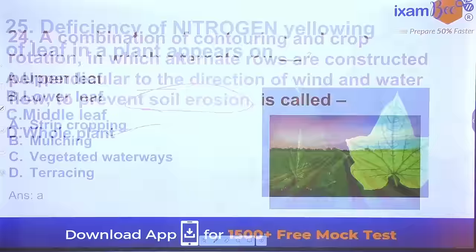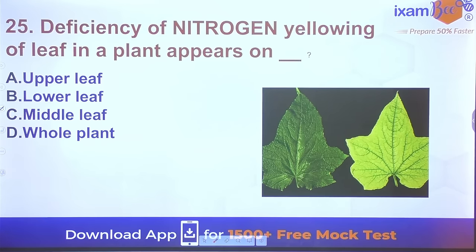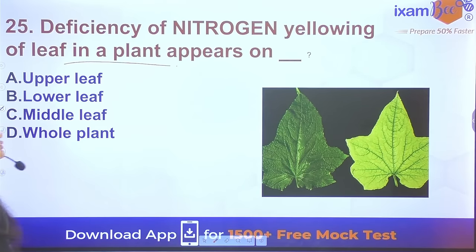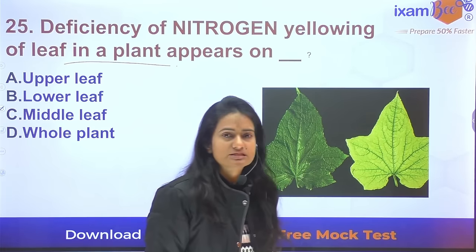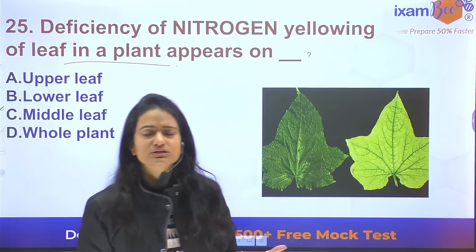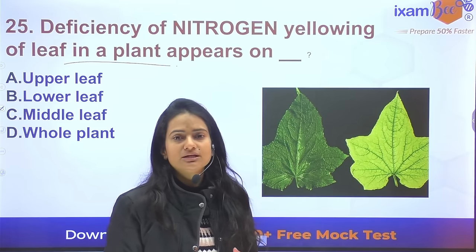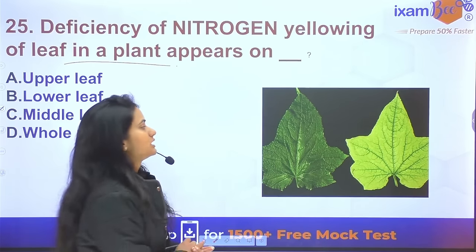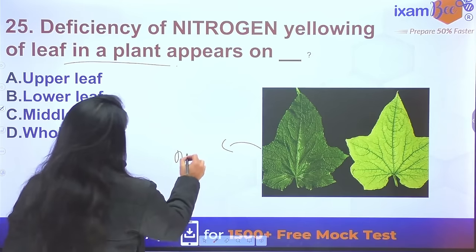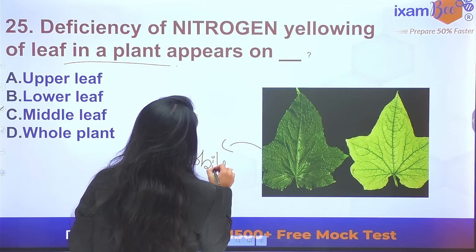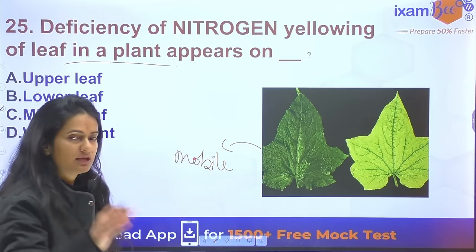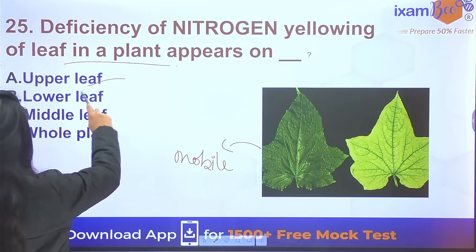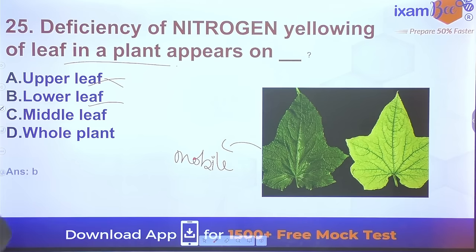Question 25: Deficiency of nitrogen causes yellowing of leaves in plants. This yellowing appears first on the lower (older) leaves because nitrogen is a highly mobile element. It moves quickly from old parts to new parts, so deficiency symptoms appear in the lower, older leaves first.